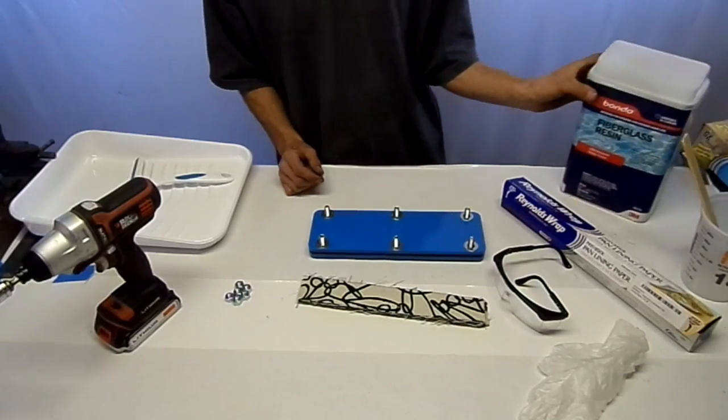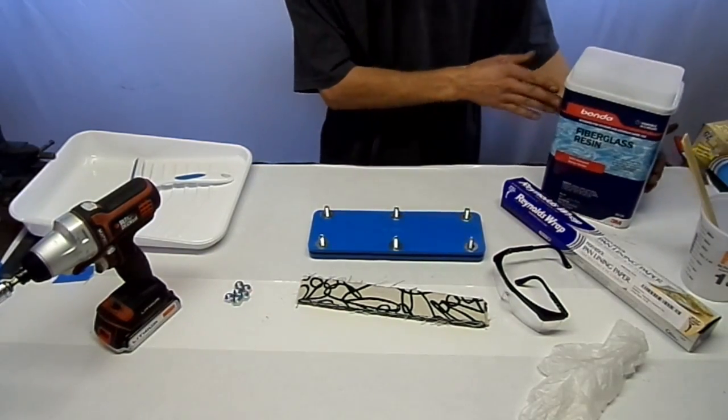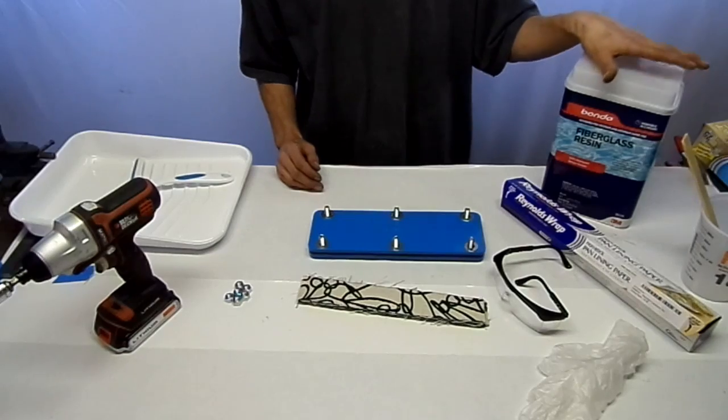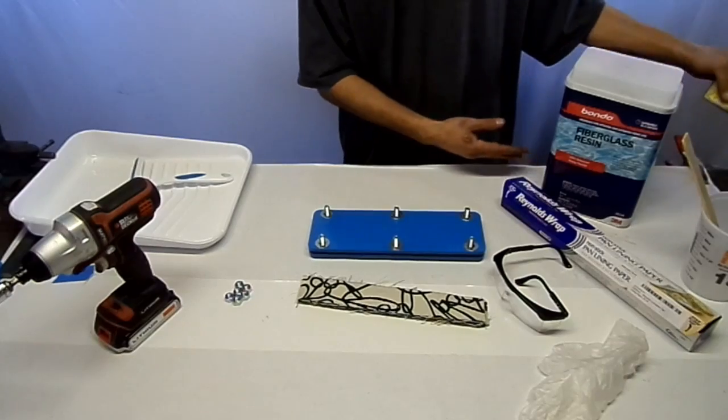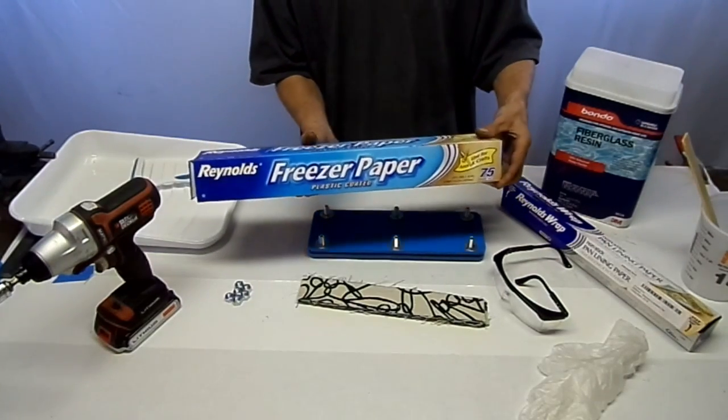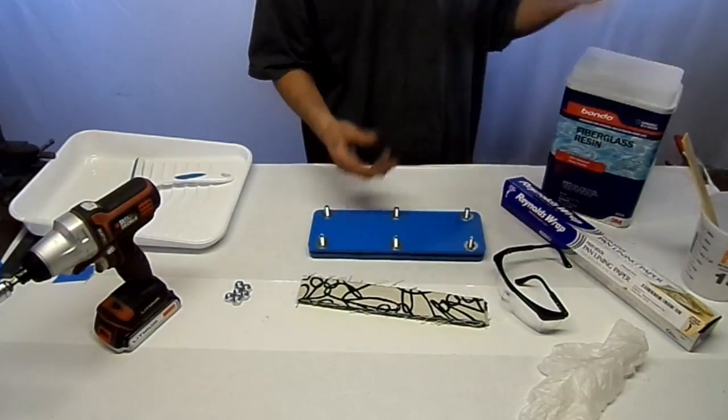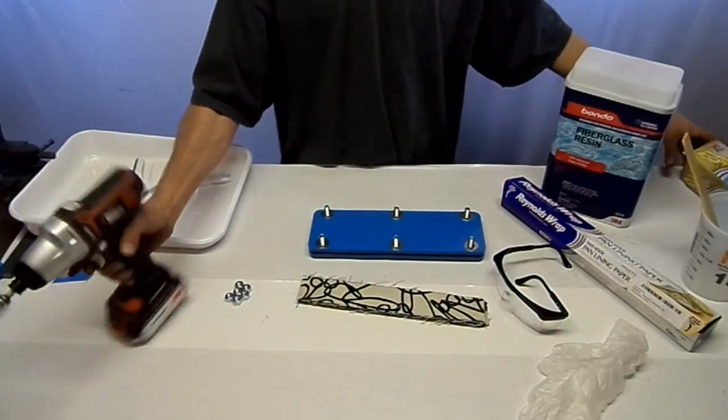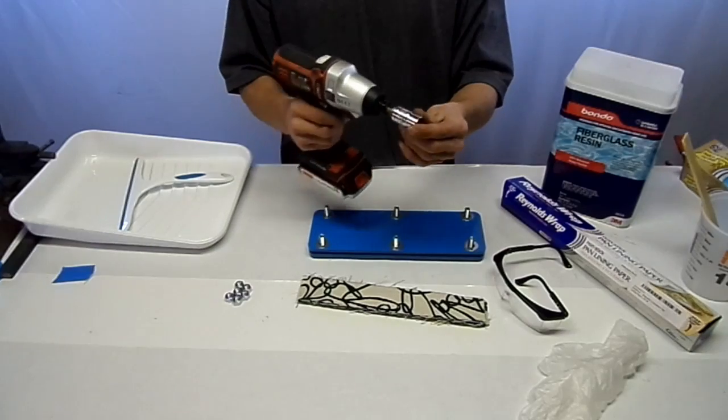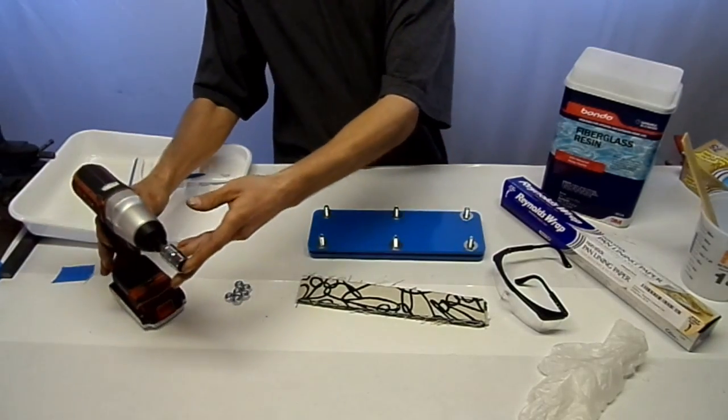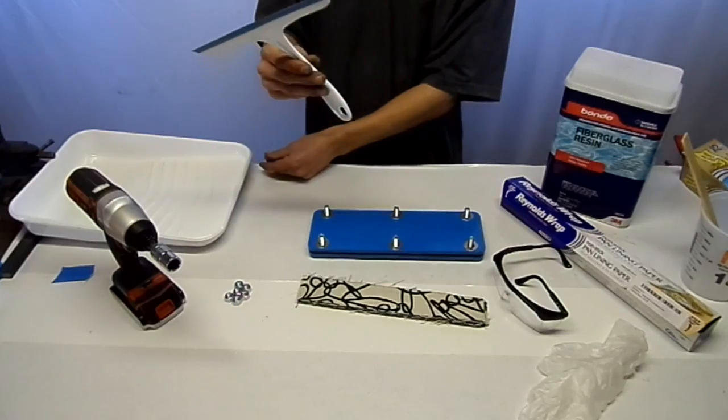We're going to be using fiberglass resin today. You can also use epoxy resin and polyester resin with these presses. You're going to want some freezer paper to protect your work surface, electric drill or impact gun with a 9-16ths socket on it, a paint tray and a squeegee.